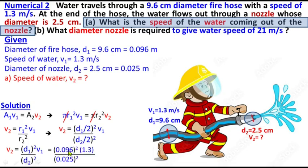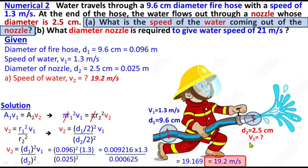D₁ is 0.096, V₁ is 1.3, D₂ is 0.025. Computing: 0.096² equals 0.009216, 0.025² equals 0.000625. Multiplying 0.009216 by 1.3 and dividing by 0.000625 gives 19.169, which rounds to 19.2 meters per second. So V₂ is 19.2 meters per second.